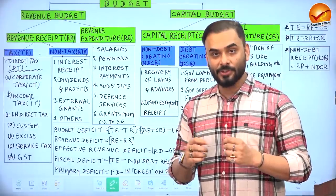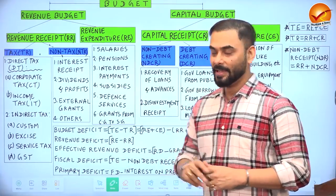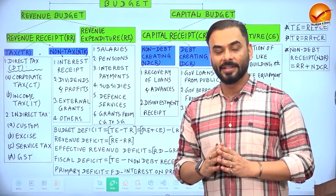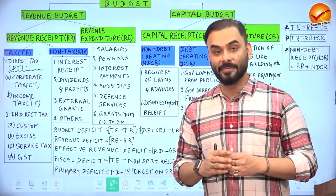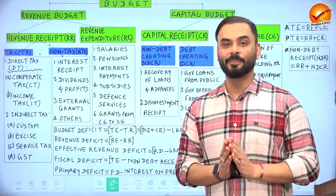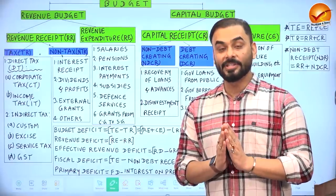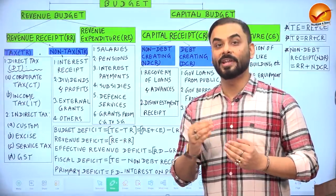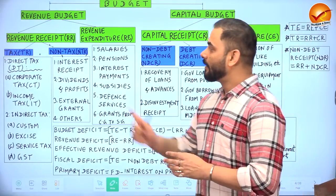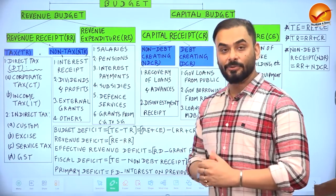The revenue budget deals with how the government earns and spends revenue on a day-to-day or regular basis. The capital budget talks about the assets the government creates — for example, constructing a road or buying a defense aircraft — and also the liabilities created, such as taking a loan from the IMF. Revenue budget can be divided into revenue receipts and revenue expenditure.